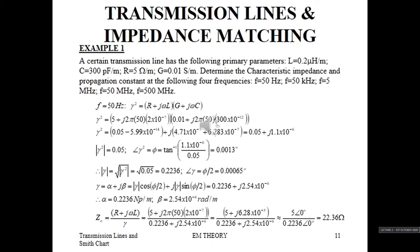We are required to determine the characteristic impedance Z₀ and the propagation constant gamma at the following four frequencies: F = 50 Hz, F = 50 kHz, F = 50 MHz, and F = 500 MHz.